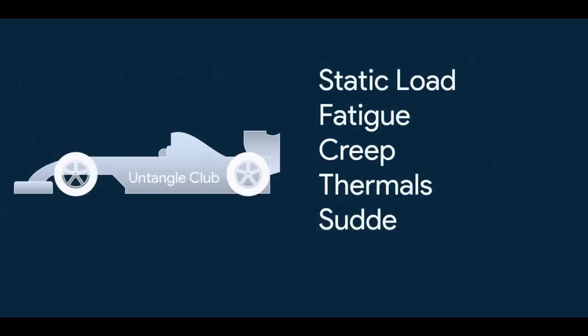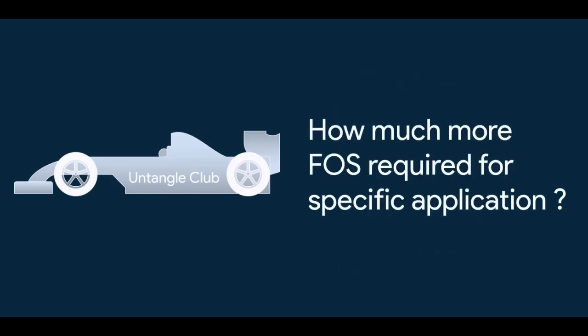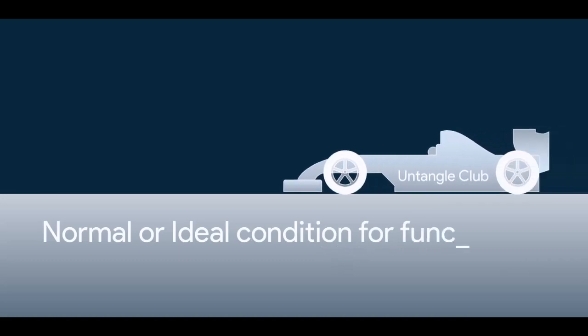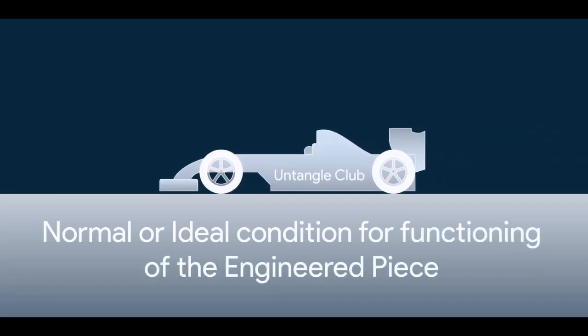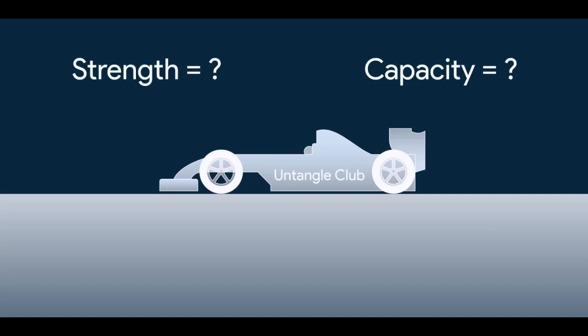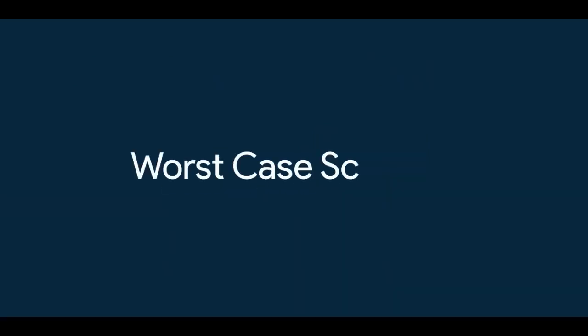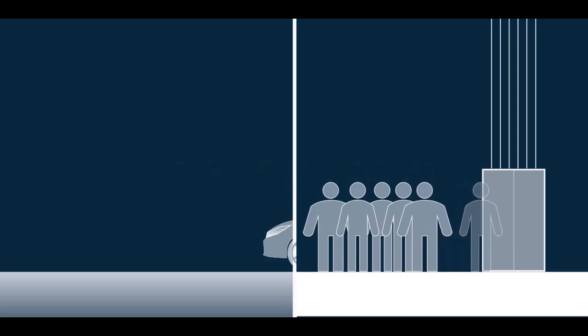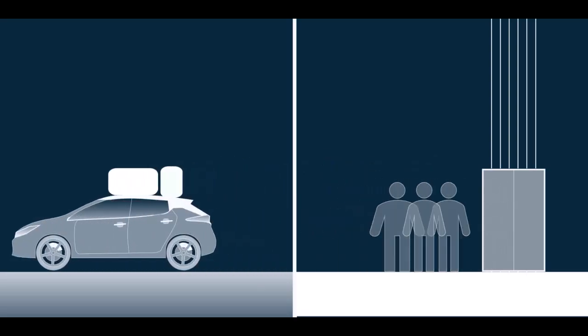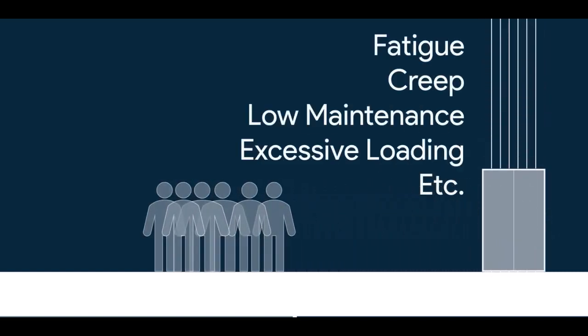Once you have all the factors for which you need more strength or more capacity, then you can move to the next step that is understanding how much more factor of safety you need for that specific application. For that, you have to consider the normal conditions or ideal conditions for functioning of the engineered piece and see how much strength and capacity you need for that. Then consider the worst case scenario which your engineered piece has to handle. Like this or like this. Now in this condition, understand the strength and capacity you need after the strength loss and due to all these factors like fatigue, creep, low maintenance, excessive loading, etc. Now design for that condition.